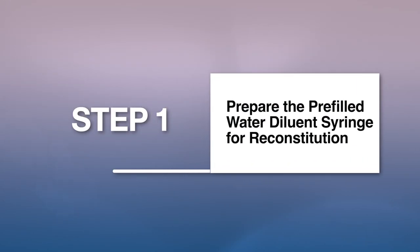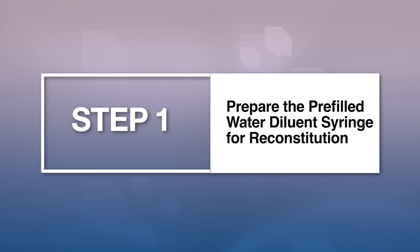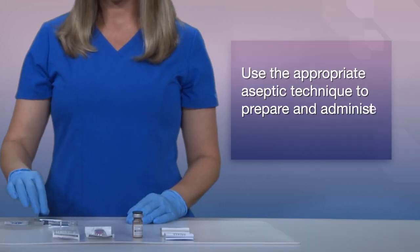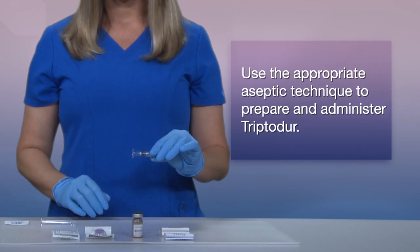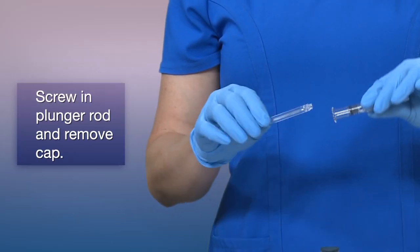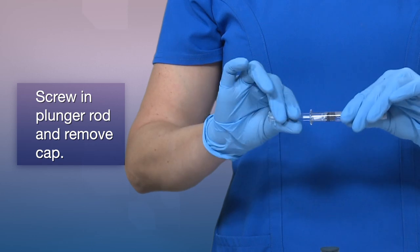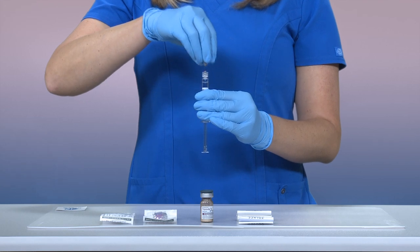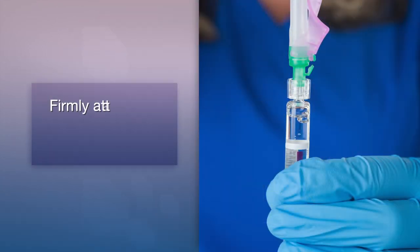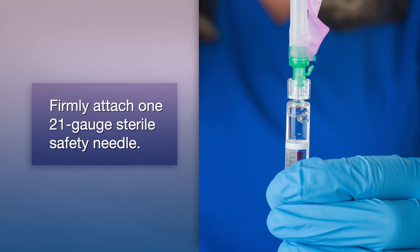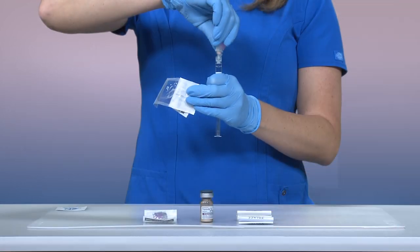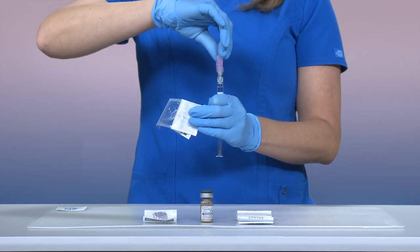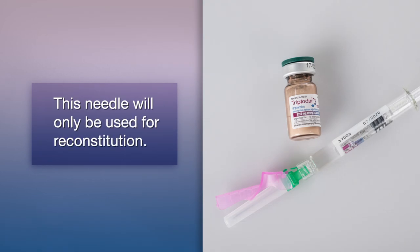Step 1: Prepare the pre-filled water diluent syringe for reconstitution. Use the appropriate aseptic technique to prepare and administer Tryptidor. Screw the plunger rod into the barrel end of the pre-filled sterile water diluent syringe. To remove the cap, twist to separate from the luer lock on the syringe barrel. Next, firmly attach one of the 21-gauge sterile safety needles onto the pre-filled sterile water diluent syringe with a push and clockwise twist. This 21-gauge needle will only be used for reconstitution of the product.